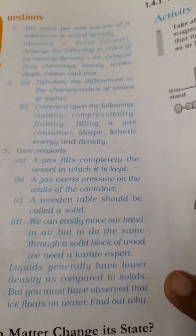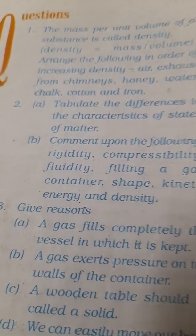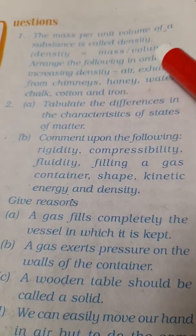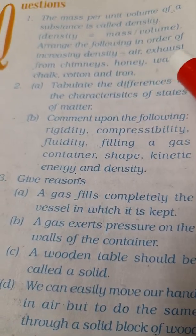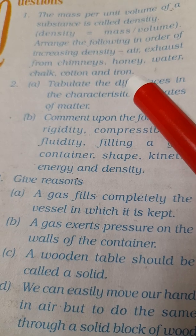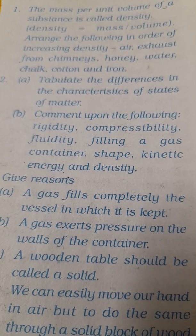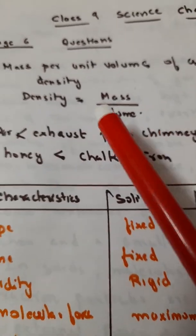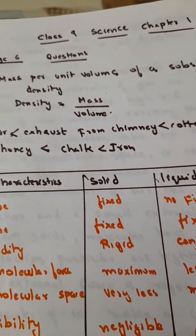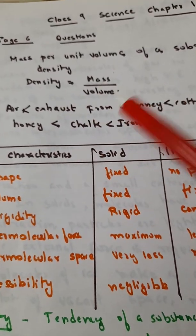Let us start with page number 6. First question you can see: the mass per unit volume of a substance is called density. So what is density? It is mass per unit volume. You have to arrange the following in order of increasing density: air, exhaust from chimneys, honey, water, chalk, cotton, and iron. So we know that mass per unit volume of a substance is what we call density, that is density equals mass by volume.